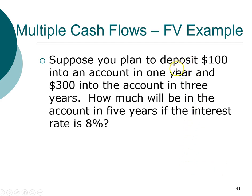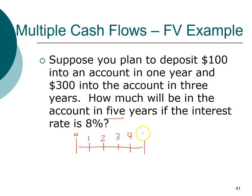Let's say we have this saving plan where you're going to put $100 into your account in one year, and then $300 in the same account in three years. The question is how much would you have in the account total at the end of five years if you're earning 8% interest on this account. Let's draw this problem on our timeline. This entire investment horizon lasts five years. Our first cash deposit of $100 occurred in year one, and our second deposit of $300 occurred in year three.